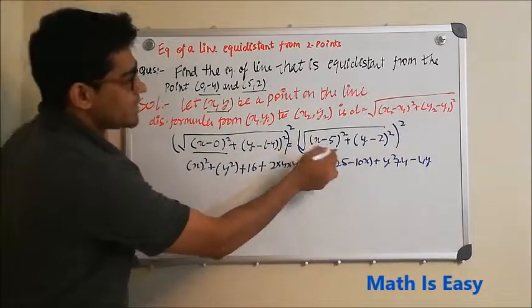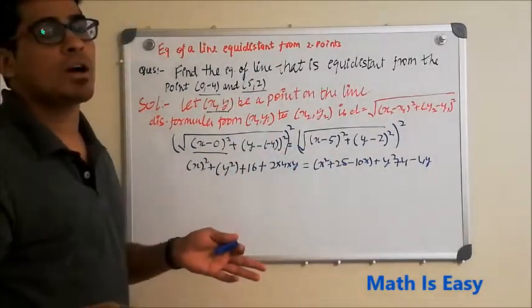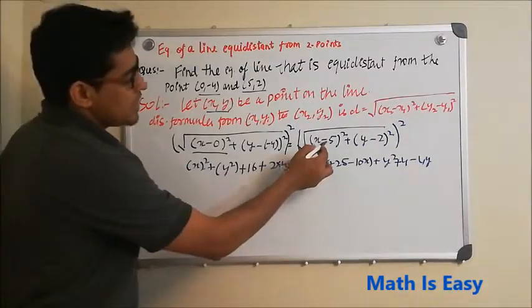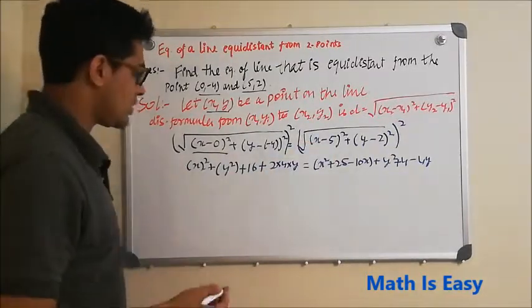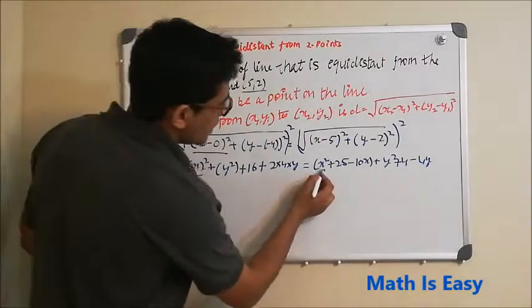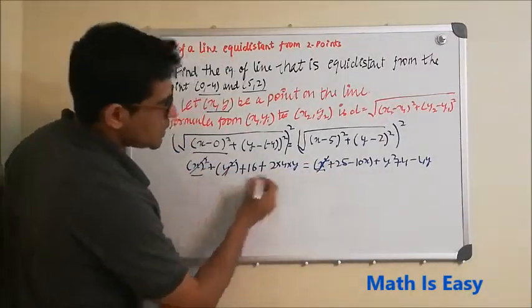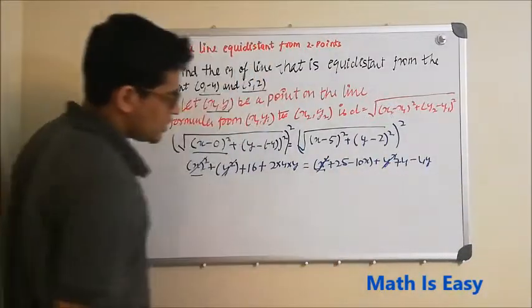We have x² here and x² here, so we will cancel this out. We have y² here and y² here, we will cancel this out too.